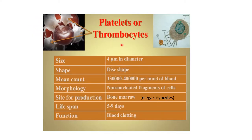Moving on to platelets, or thrombocytes. The size is 4 nanometers in diameter and shape is disc-shaped. The mean count is 1,30,000 to 4,00,000 per cubic mm of blood. They are non-nucleated fragments of cells. The site of production is bone marrow and they are produced from megakaryocyte cells. Lifespan is 5 to 9 days and the main function is blood coagulation or blood clotting.